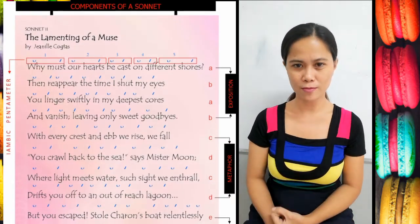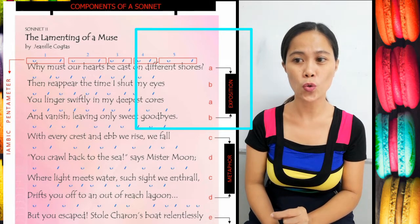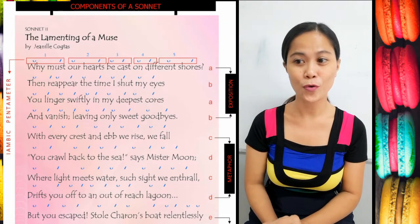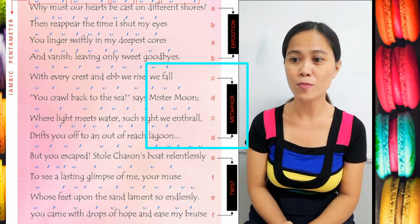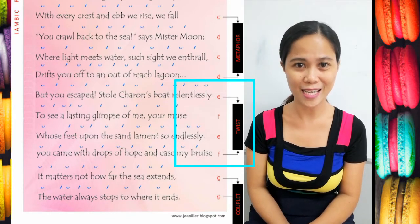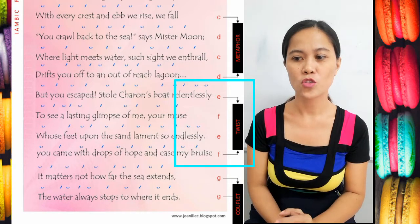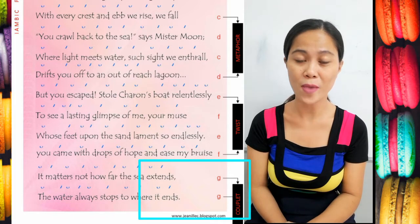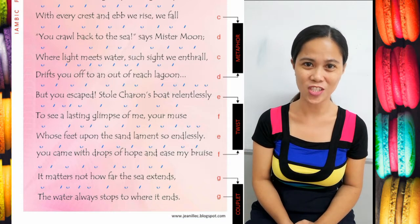Let's take a look at the lines in the poem closely. The first four lines follow A-B-A-B — 'shores' rhymes with 'course,' 'ice' rhymes with 'advice.' Then C-D-C-D — 'fall' rhymes with 'enthrall,' 'moon' rhymes with 'lagoon.' Then E-F-E-F — 'relentlessly' rhymes with 'endlessly.' 'Muses' rhymes with 'bruise' for G-G — they have the same ending sound. It's challenging to write this sonnet, very much challenging.